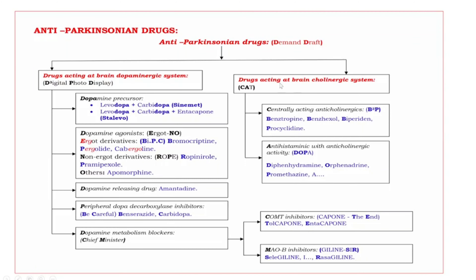Next, drugs acting at the brain cholinergic system. These are further subdivided using the mnemonic 'CAT,' bold letters C and A. C: centrally acting anticholinergics. A: antihistaminics with anticholinergic activity. Centrally acting anticholinergics use the mnemonic 'BP,' bold letters B, B, B, P. B: benzatropine. Second B: benzhexol. Third B: biperiden. P: procyclidine.